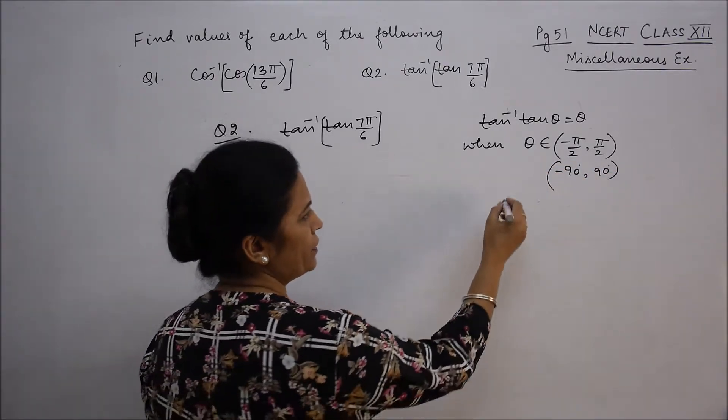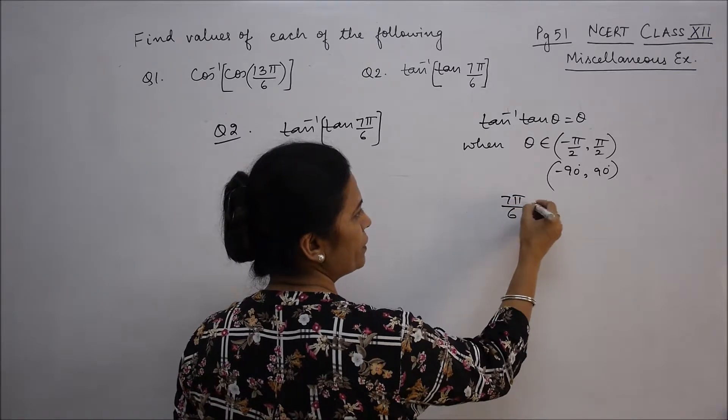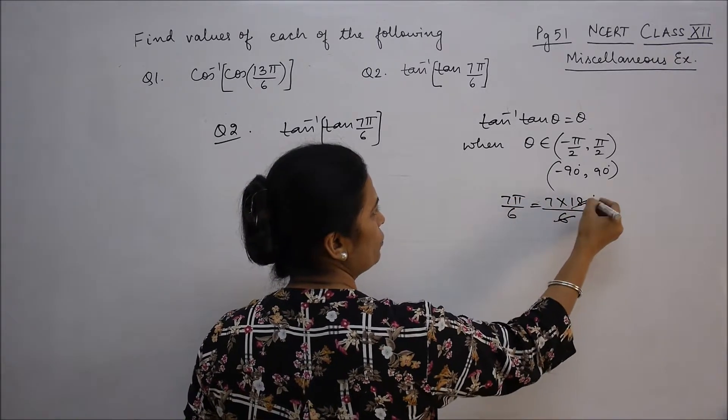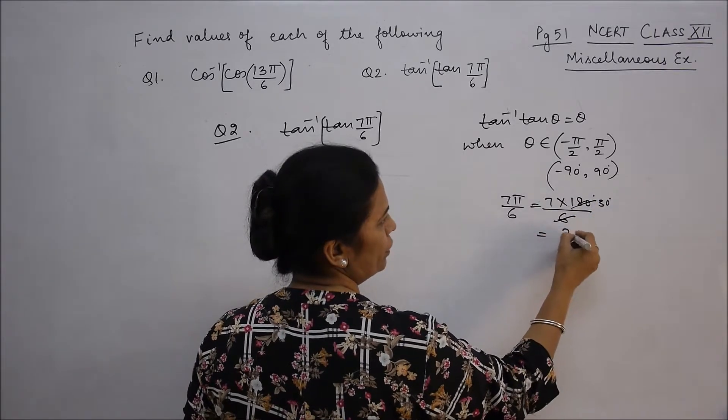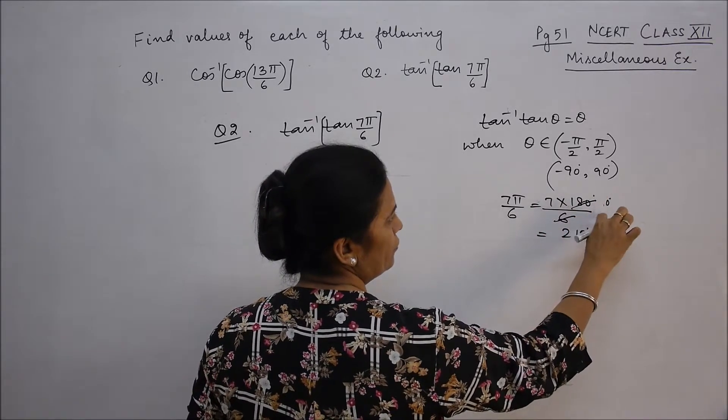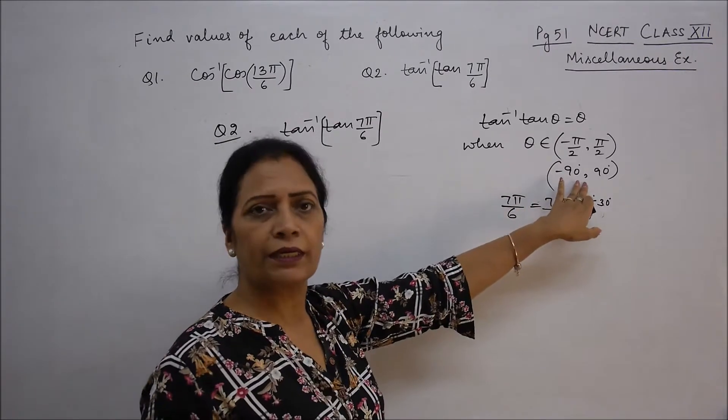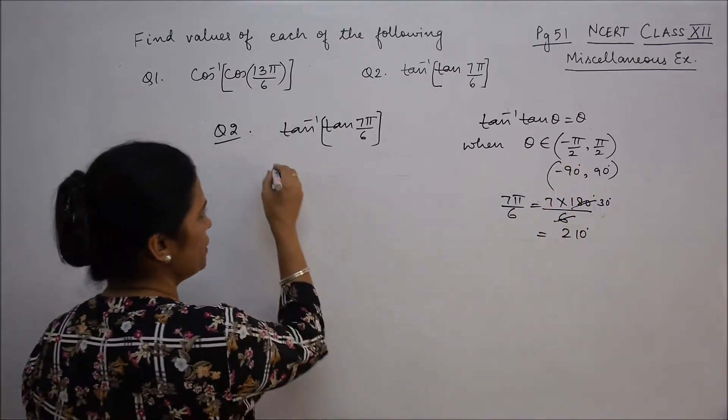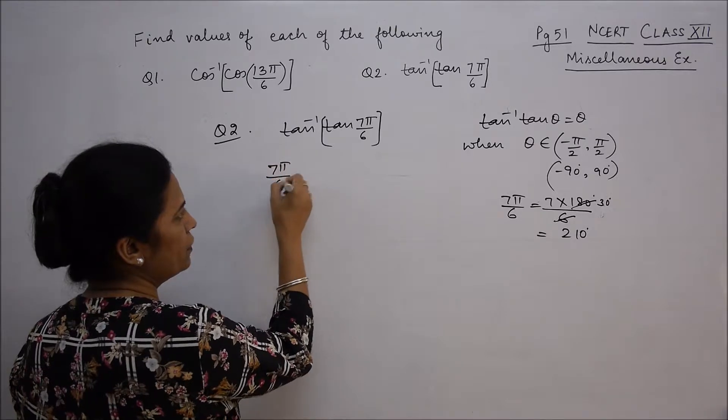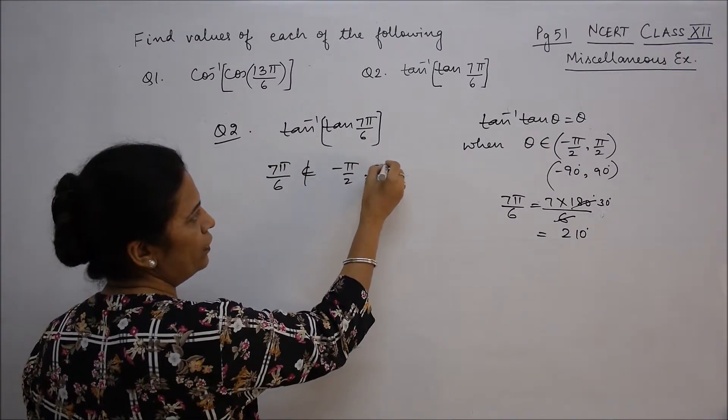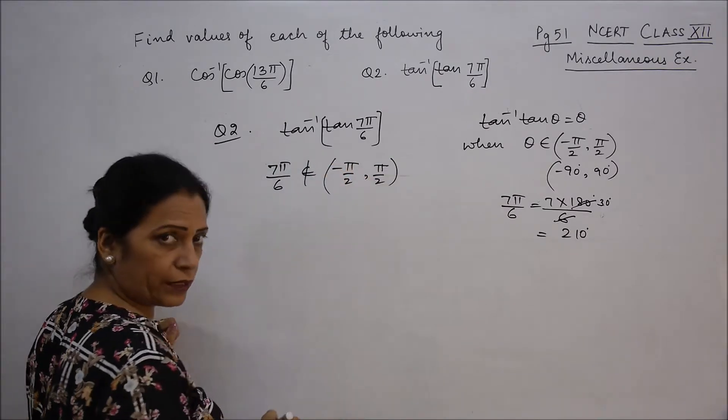So we will see that 7π/6 is: 7π/6 means 7 times 180/6, cancel it here, so how much is it? 210 degrees. Now 210 degrees, so it is clear, it does not belong. So here we have written, 7π/6 does not belong to minus π/2 to π/2. It does not belong to the principal branch.